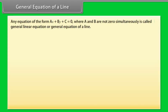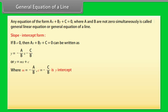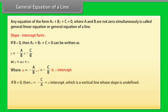General equation of a line: An equation of the form ax + by + c = 0, where a and b are not simultaneously zero, is called the general linear equation or general equation of a line. Slope-intercept form: If b ≠ 0, then ax + by + c = 0 can be written as y = (−a/b)x − c/b, i.e., y = mx + c, where m = −a/b and c = −c/b is the y-intercept. If b = 0, then x = −c/a, which is a vertical line whose slope is undefined.